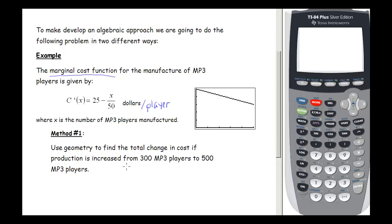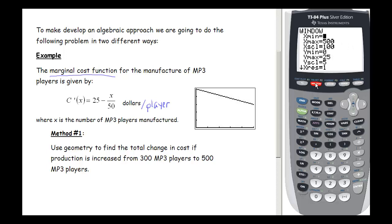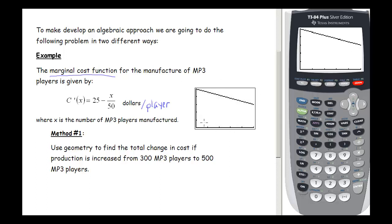Whenever we use a geometric method, we first need to verify it's appropriate by graphing the area we're trying to find. I'll put the marginal cost function, 25 minus x over 50, into y1 and set the window from 0 to 500 with x scale 100, y-min 0, and y-max 25. This is a linear function starting at 25 and gradually decreasing. We can also use zoom fit to get a working window. Let's go ahead and graph.